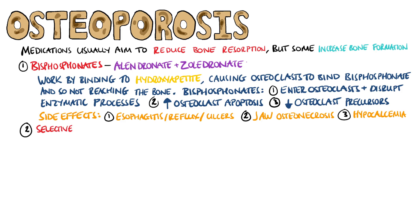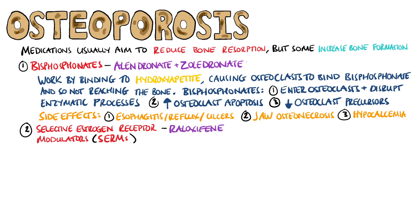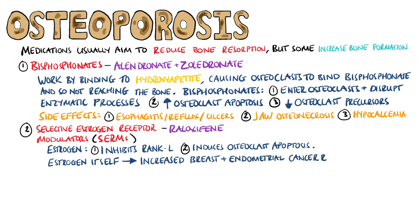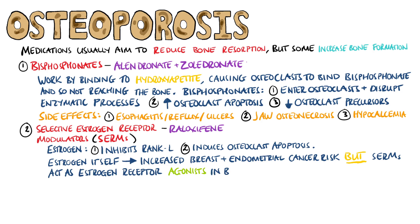Next, we have the selective oestrogen receptor modulators, or SERMs, an example of which is raloxifene. We use these because oestrogen is involved in osteoclast inhibition by inhibiting RANK-L, which is a protein that increases osteoclast activity. Oestrogen also acts by inducing apoptosis in osteoclasts. Oestrogen itself could in theory work, but it comes with an increased risk of breast and endometrial cancer. SERMs are oestrogen receptor agonists in the bone and in the heart, but they are antagonists in the breast and the uterus.